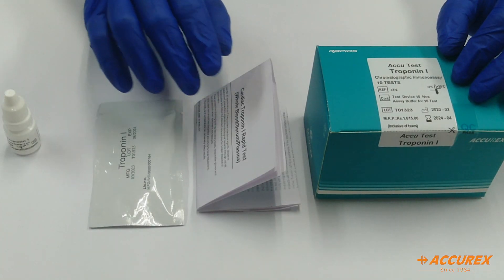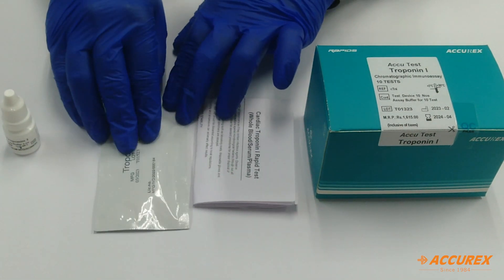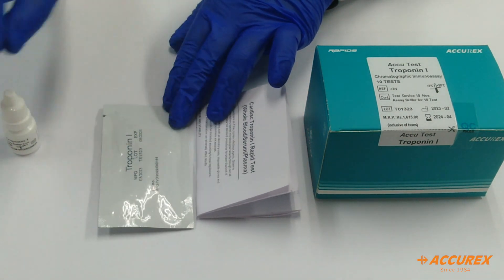Components inside the kit: You will find one package insert, one pouch containing Troponin I test card. Inside the pouch, you will find one dropper and one buffer.